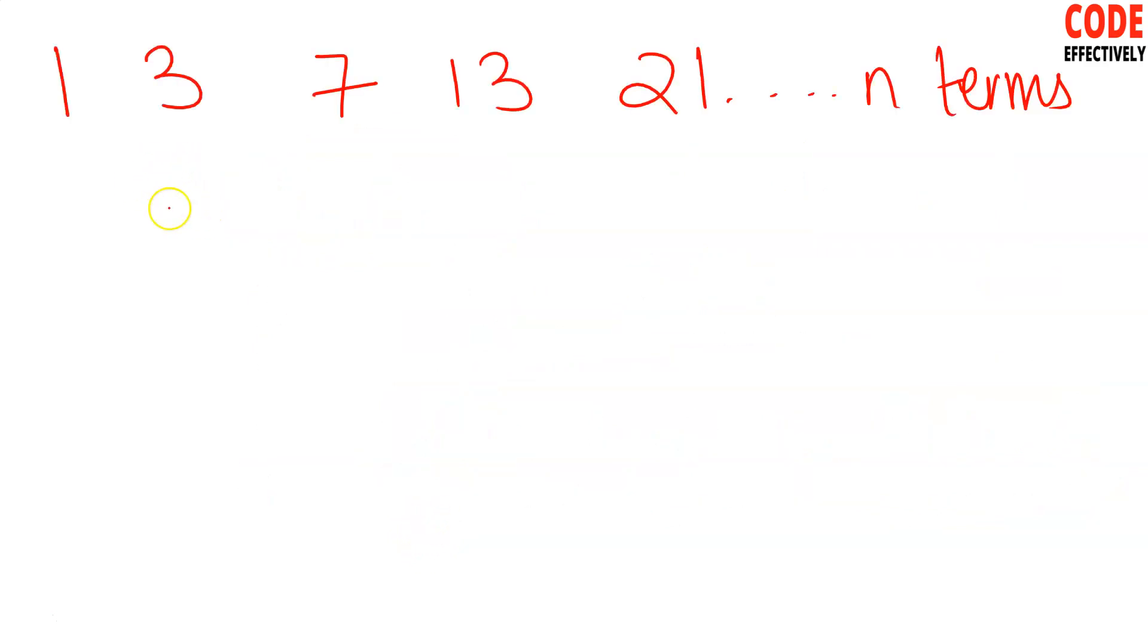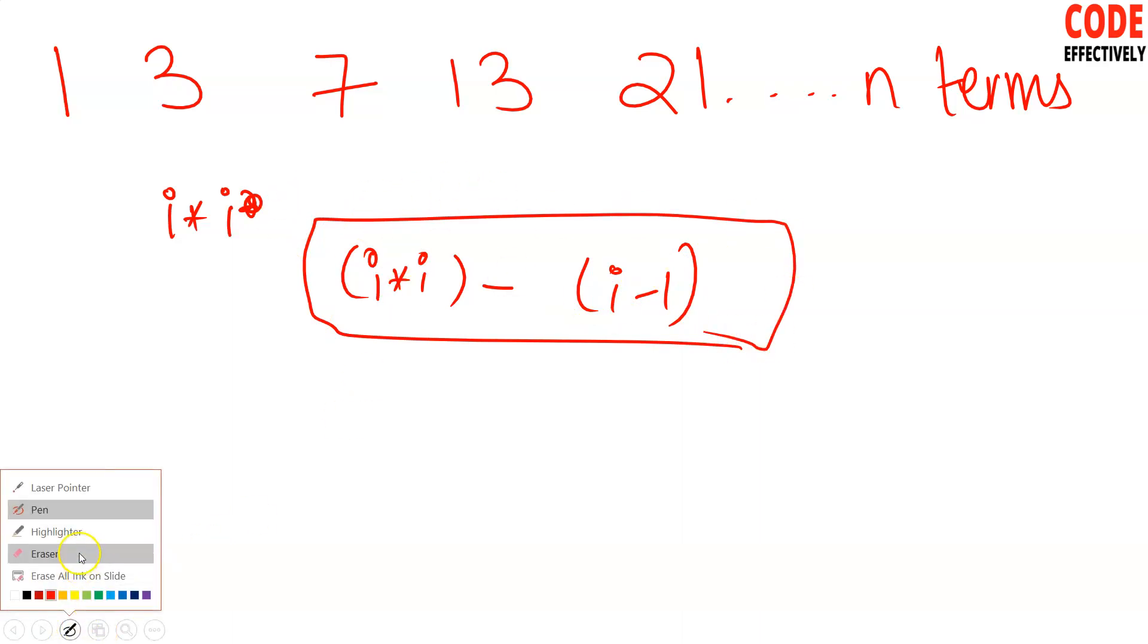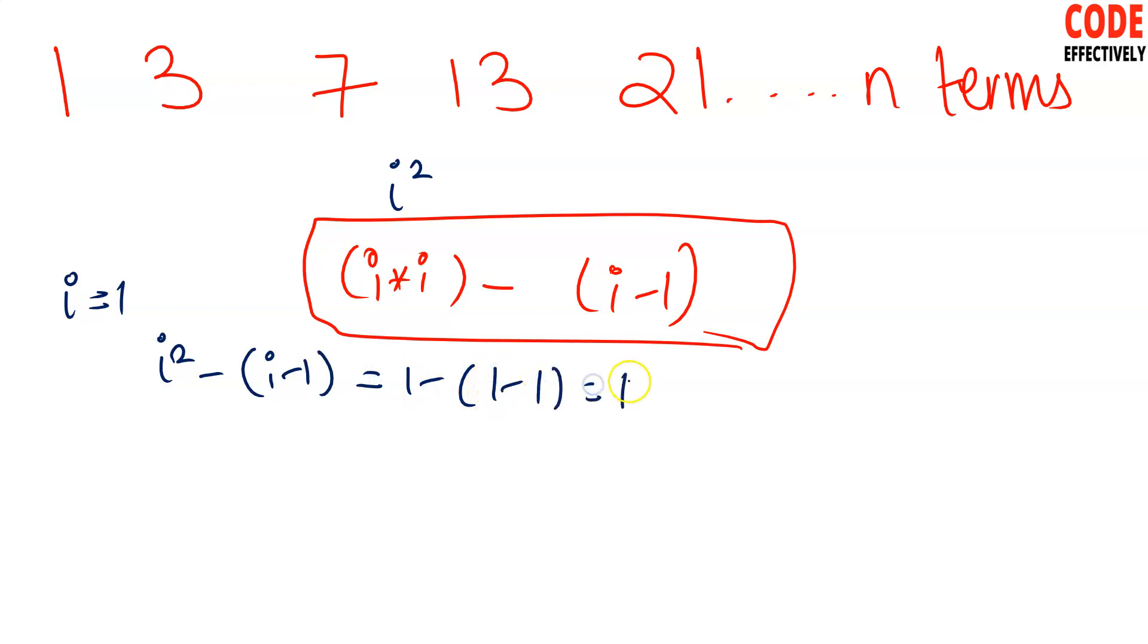I had a logic crack. It was what? i square, i into i. It is what? i into i minus i minus 1. This is a formula which is a series crack. Now you can say how to do it with practice. I started to do it so you will practice. So you will see it is really working. i equals to 1, what happens? i into i or i square, it is the same thing. So let's go i square minus i minus 1. i equals to 1, so 1 minus 1 minus 1, this is 1, the first term.